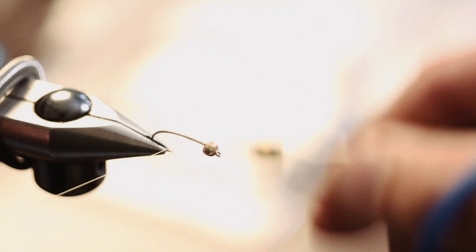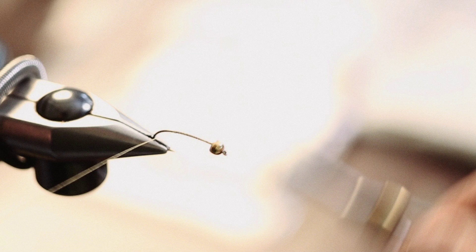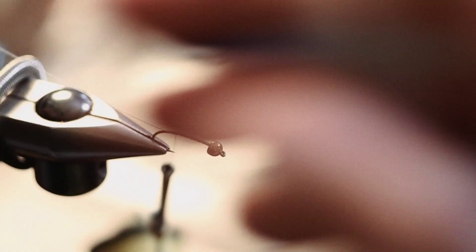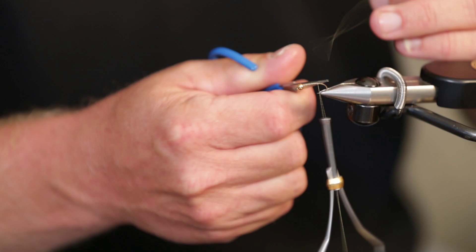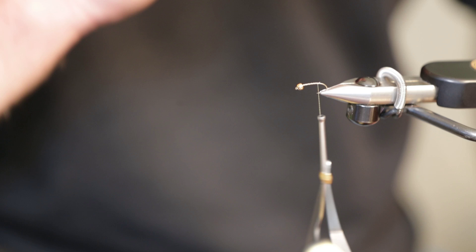We're going to use some yellow 6-0 tying thread. You could use the light Cahill color, works well. The reason I use a yellow thread is because I want it to blend in with the body color. This is going to be a stonefly with a light yellow colored body.